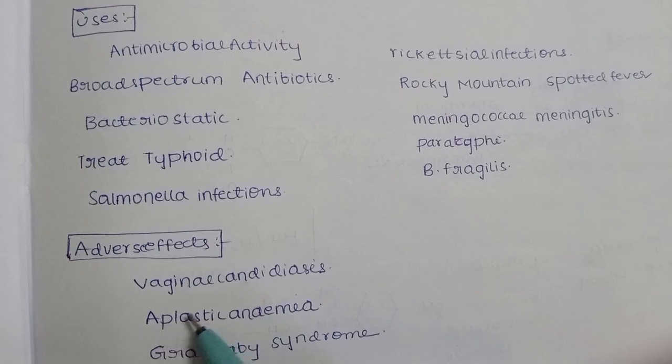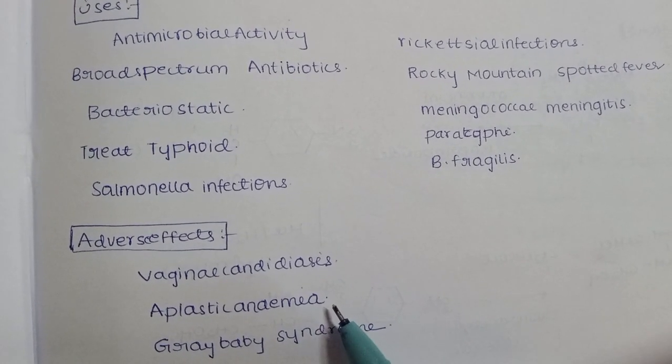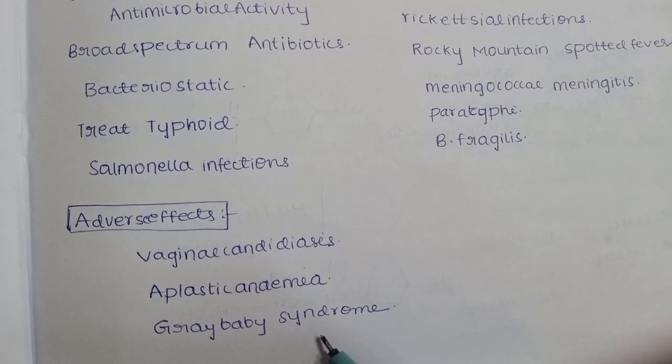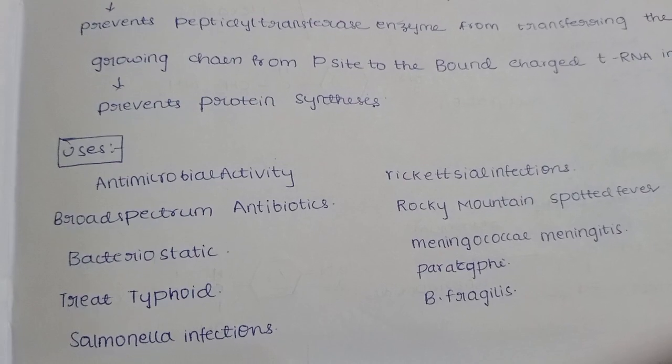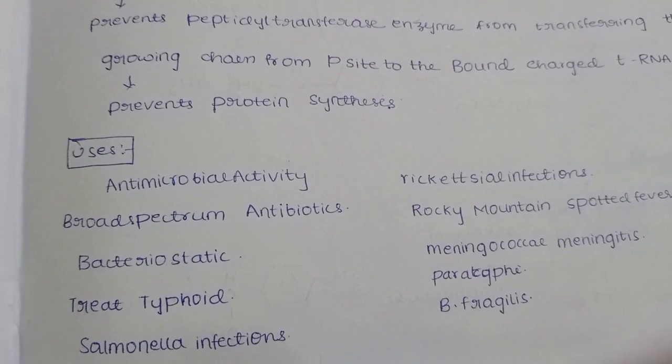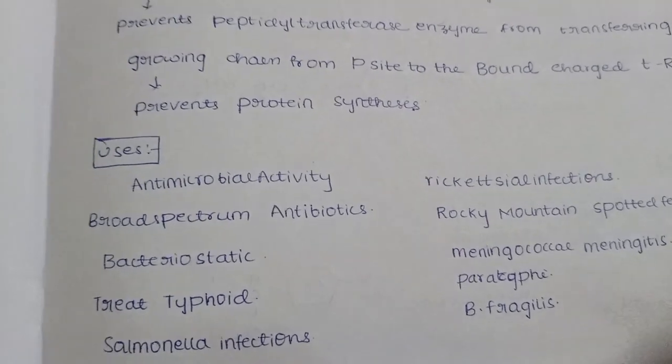Adverse effects include vaginal candidiasis and aplastic anemia. Remember it can lead to aplastic anemia and gray baby syndrome. The mechanism of action: chloramphenicol inhibits protein synthesis by binding to the 50S ribosomal subunit. Thank you.